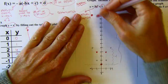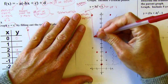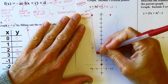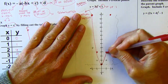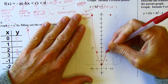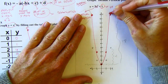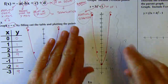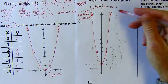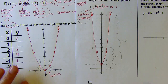I sketch in my parabola and I've got a narrower parabola than the original by way of a vertical stretch, and the whole thing is shifted up one unit.